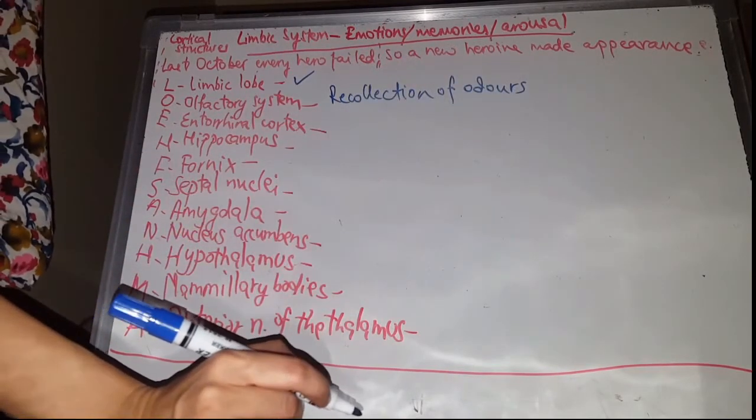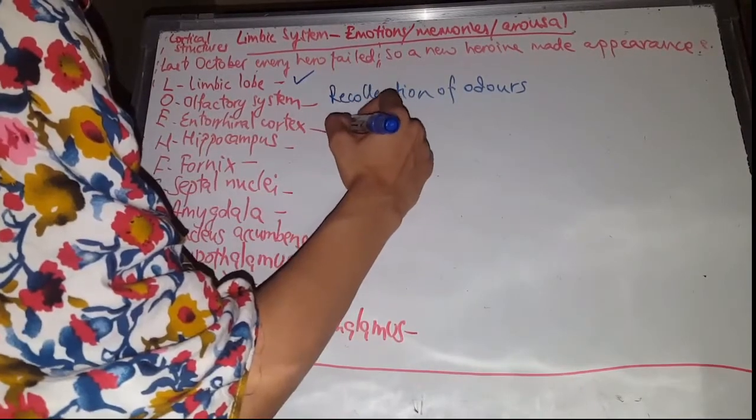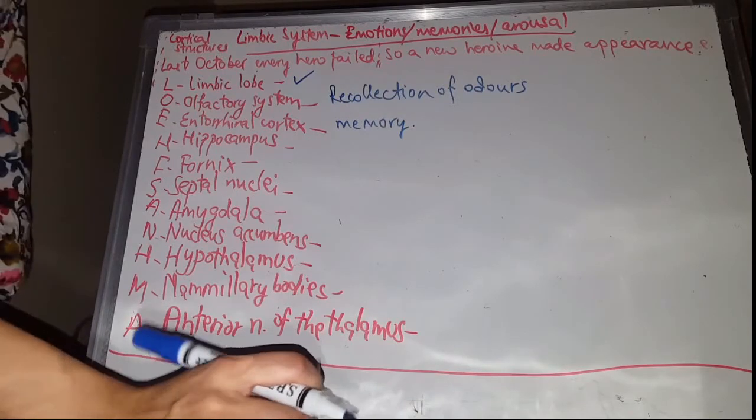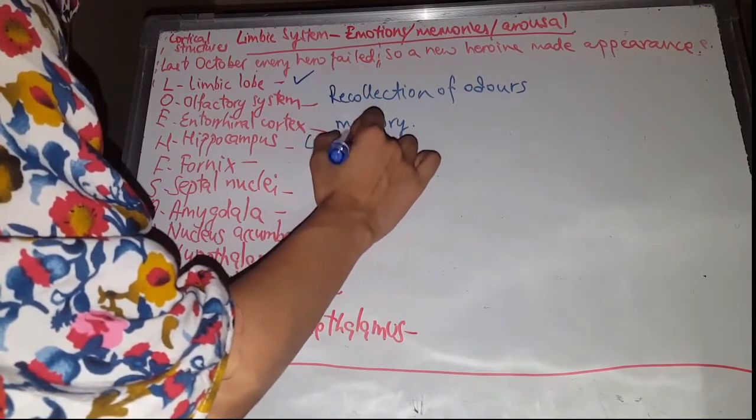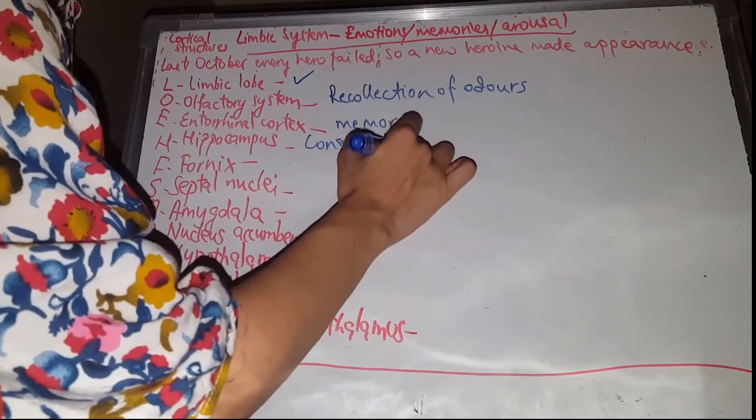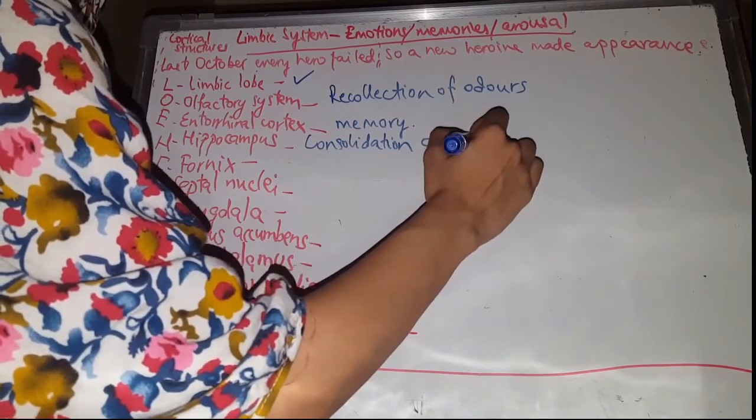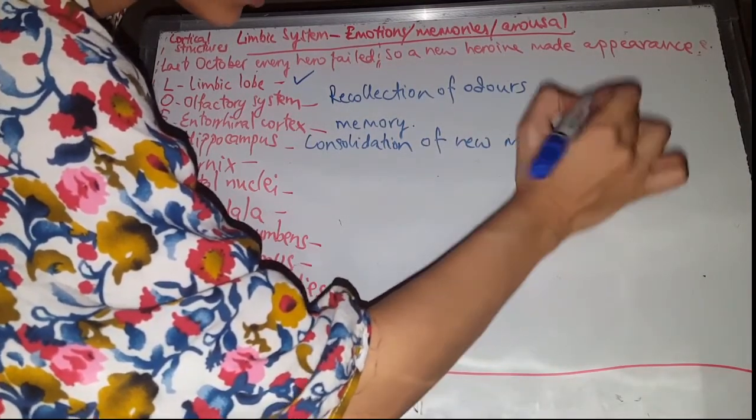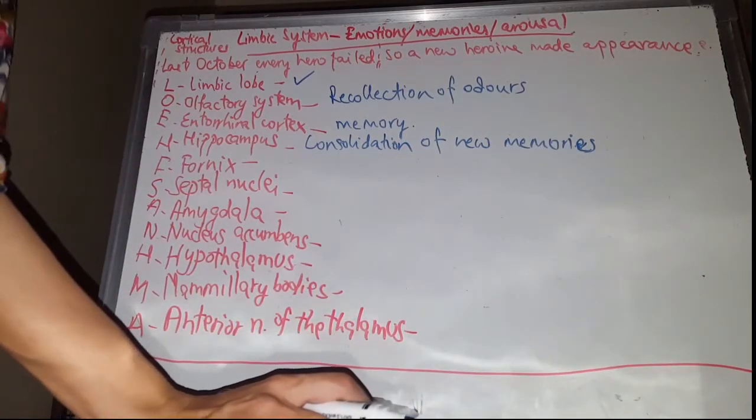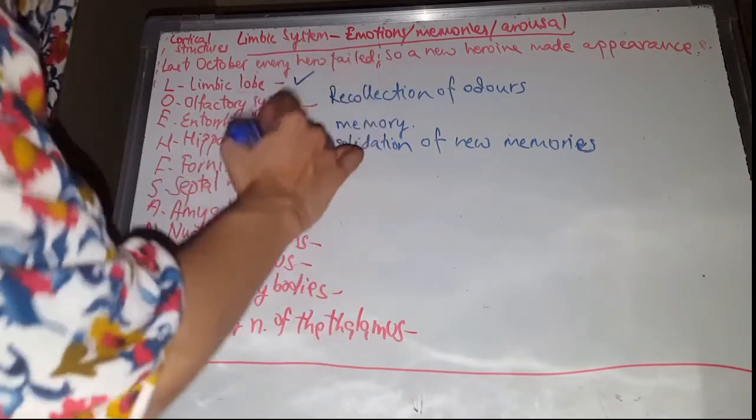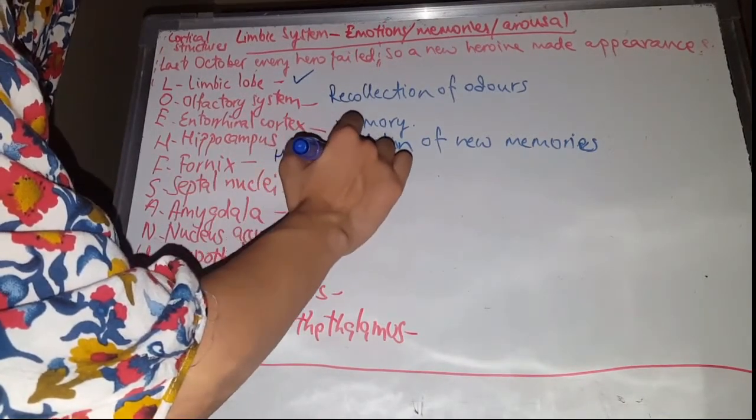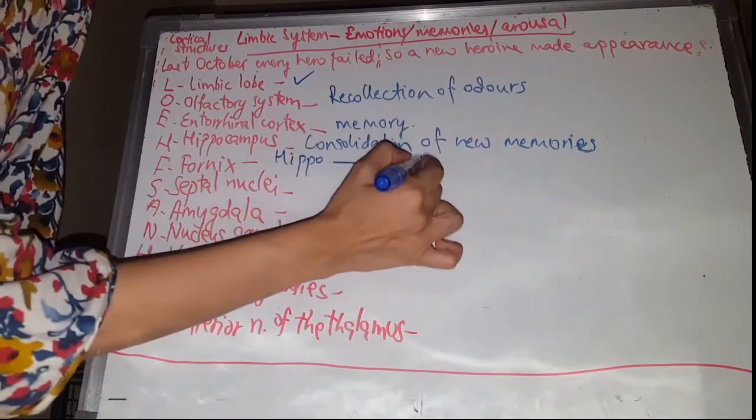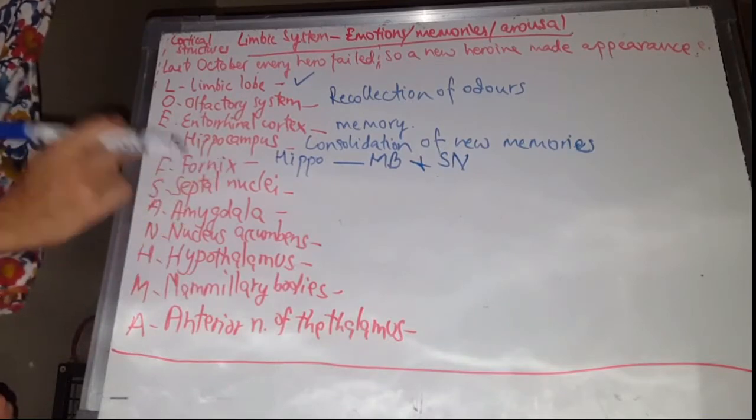For the entorhinal cortex, you've got the memory and the associated components. I'm just going to go with memory. For the hippocampus, you've got the consolidation of new memories. The fornix is a white matter structure, and it connects the hippocampus to the mammillary bodies and the septal nuclei.